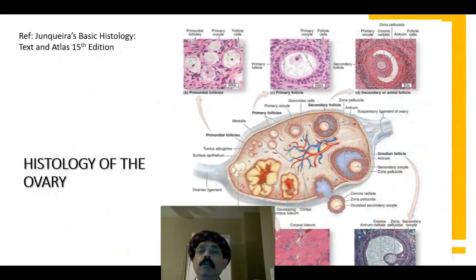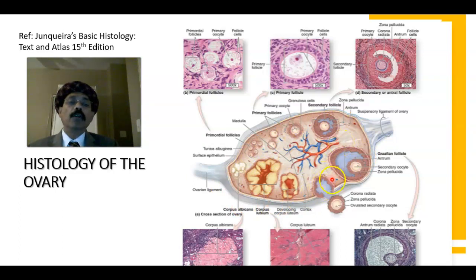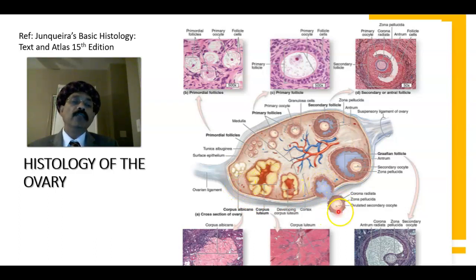Here we are looking at this: the cortex and the medulla. The medulla is vascular. The cortex contains the follicular cells and corpus luteum. There will be ovulation, and at this stage the oocyte is in the second meiotic division in metaphase stage.